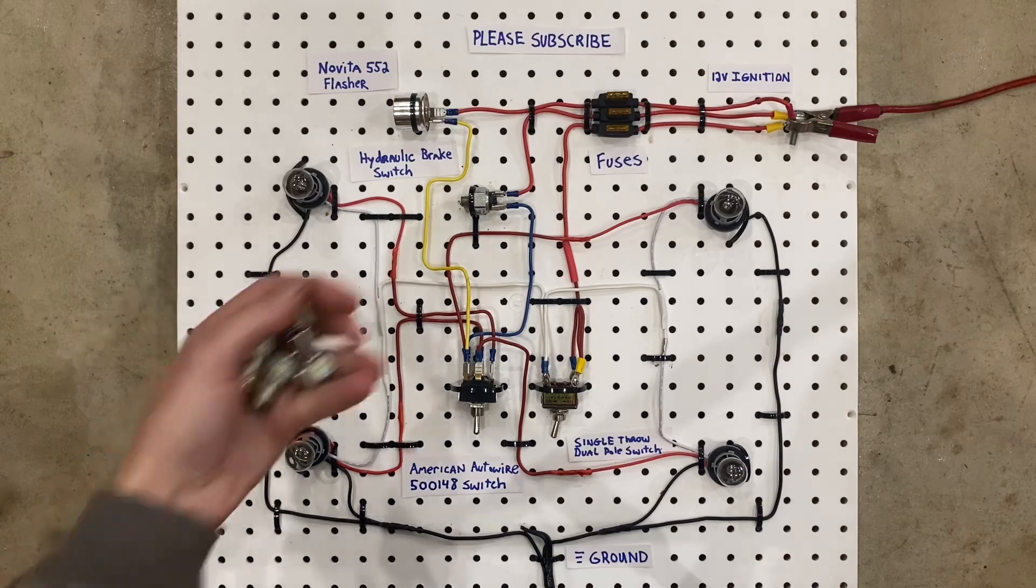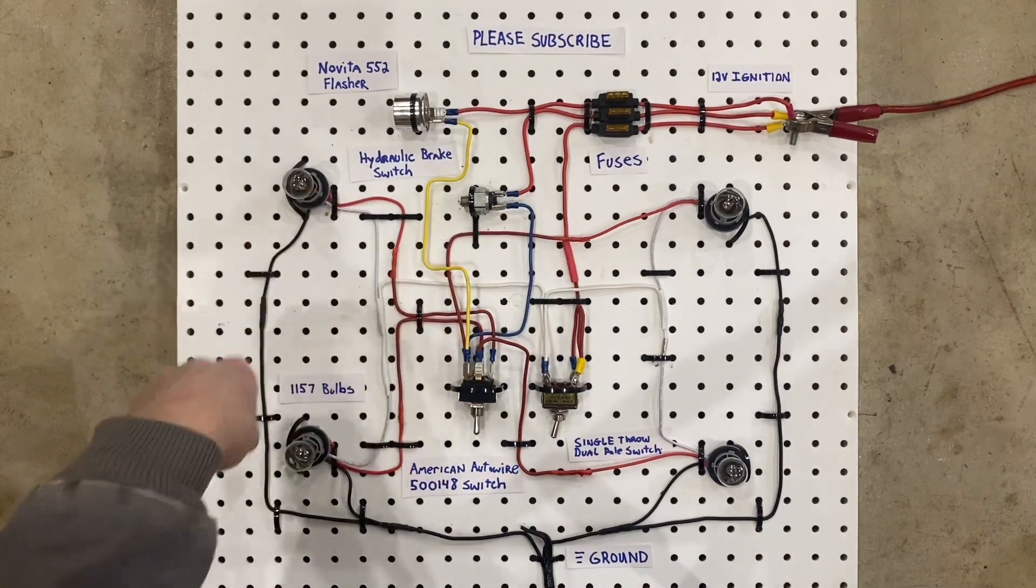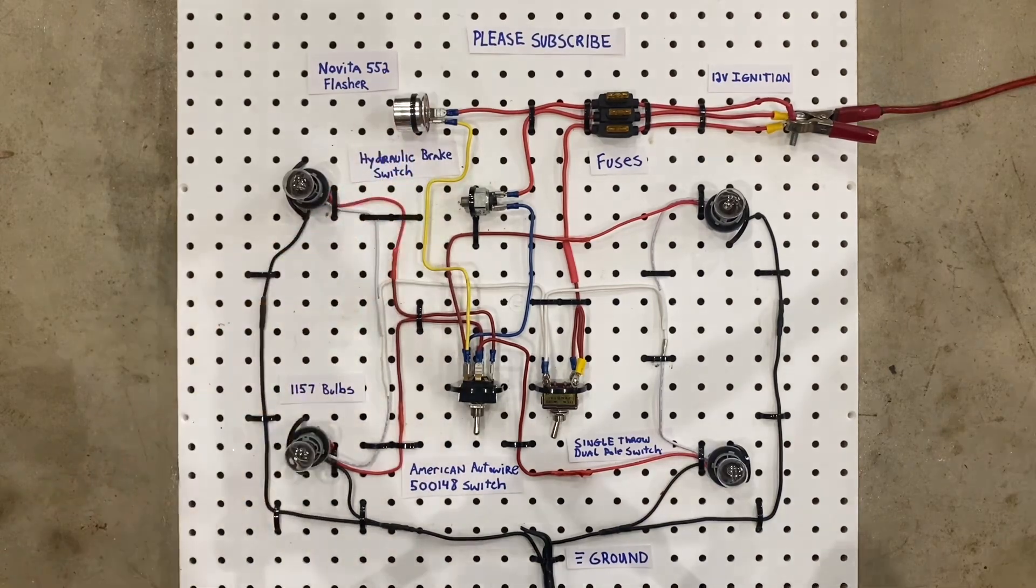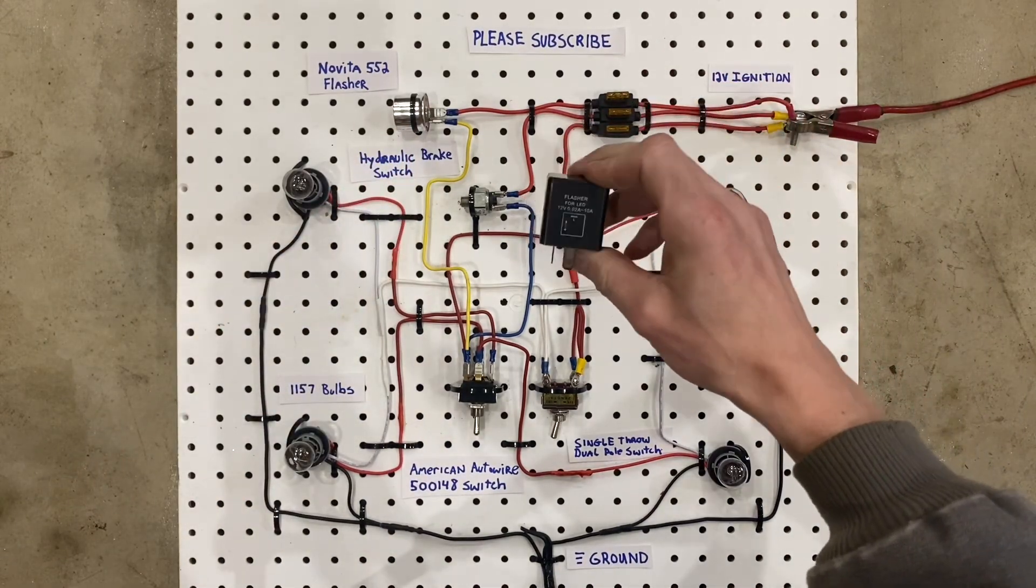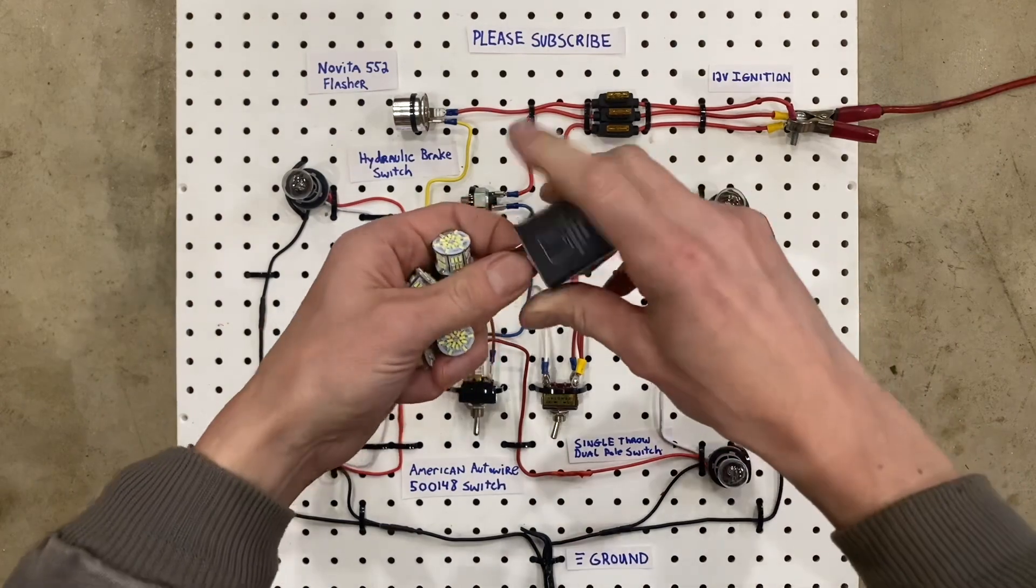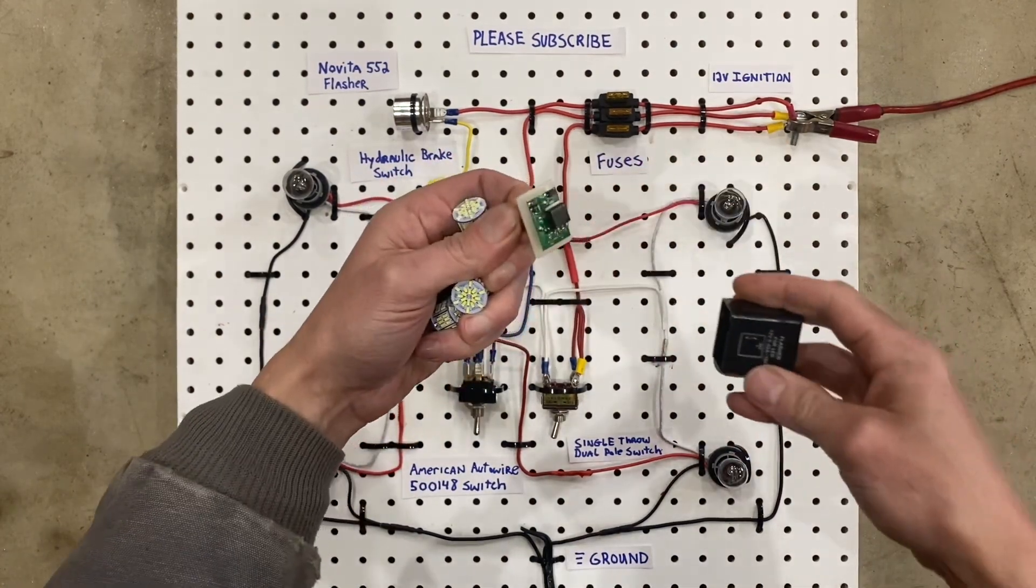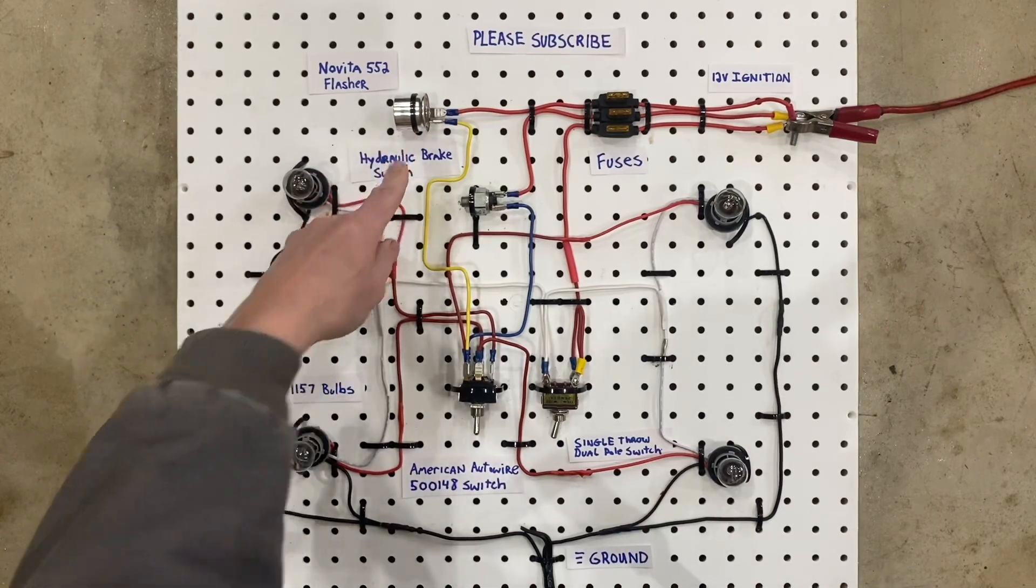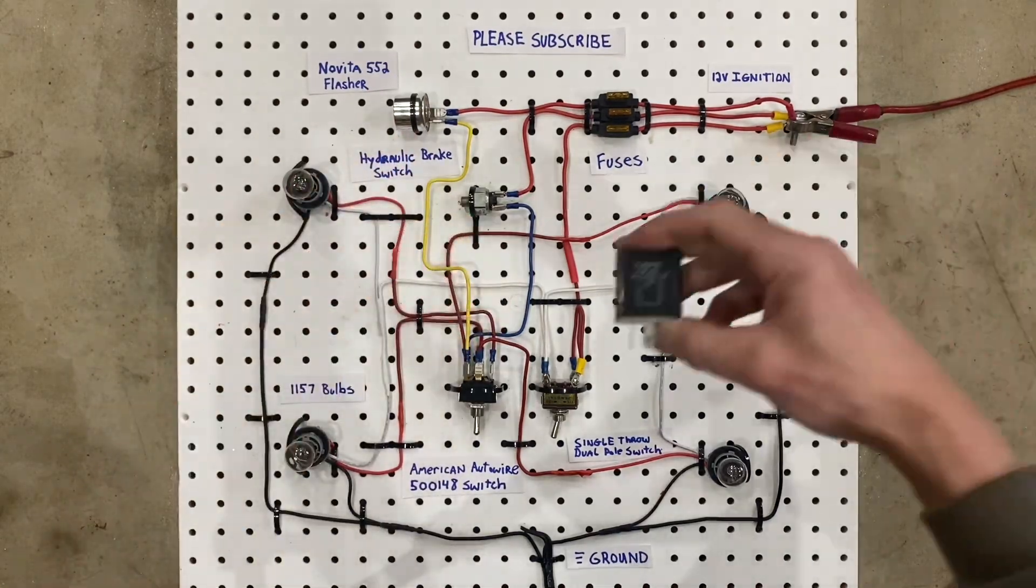If you are going to be using LED bulbs instead of the incandescent ones, you need to swap out your Novita 552 flasher with one for an LED light system. Inside this one is a bunch of witchcraft that makes it work with LEDs. These ones just don't work with LEDs, so you've got to swap it out.